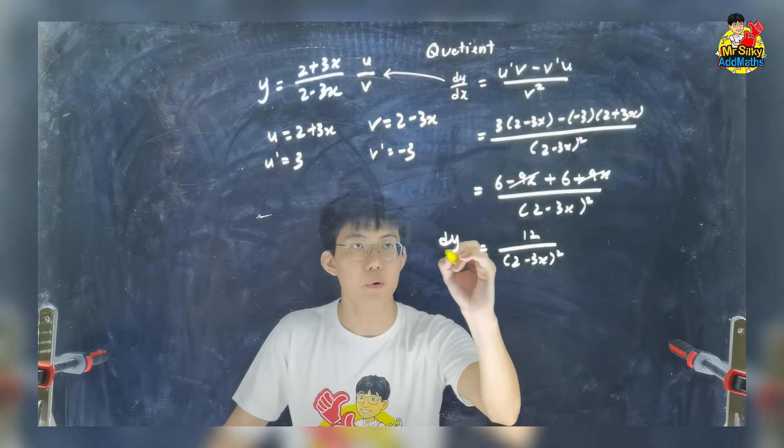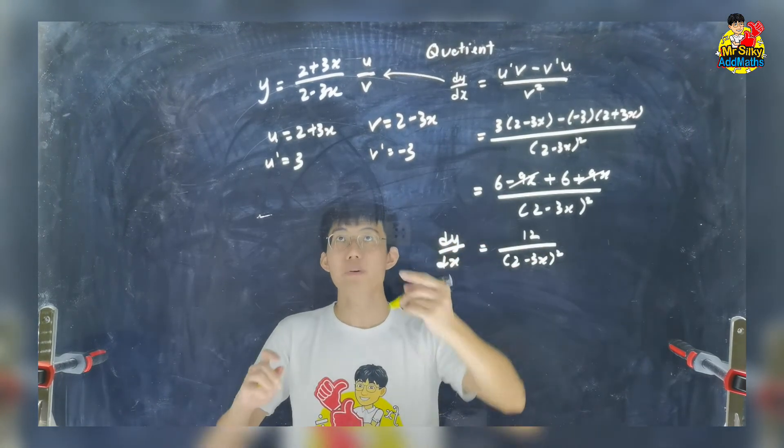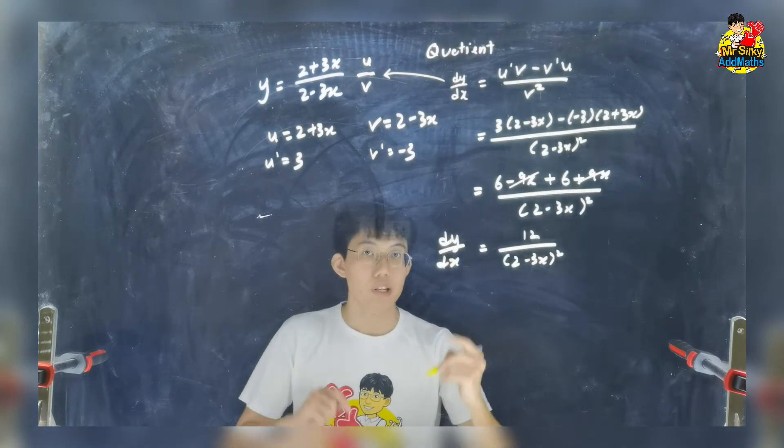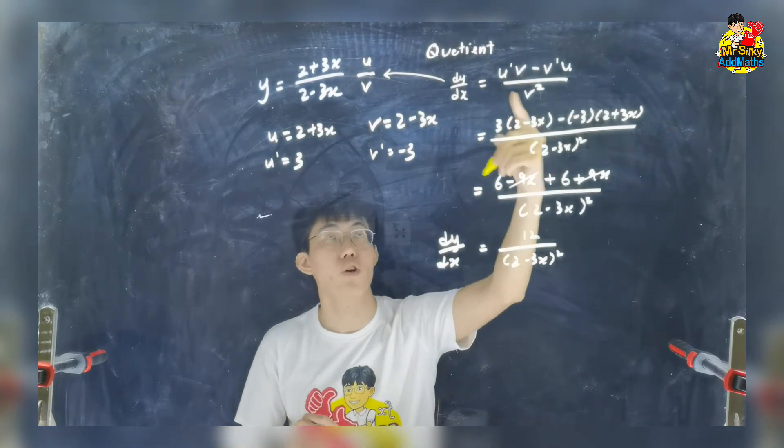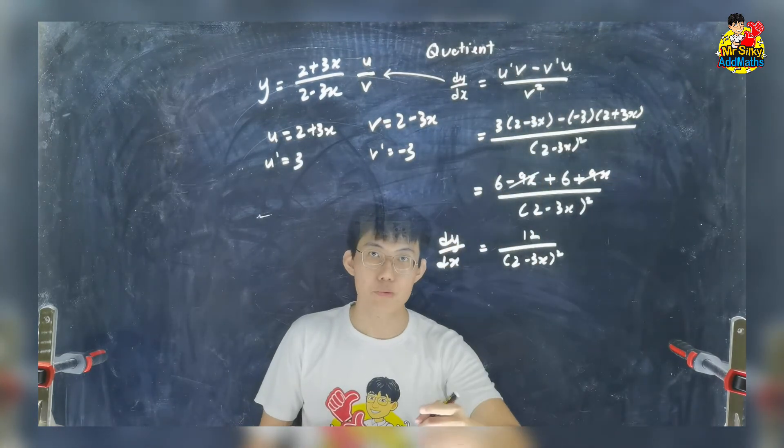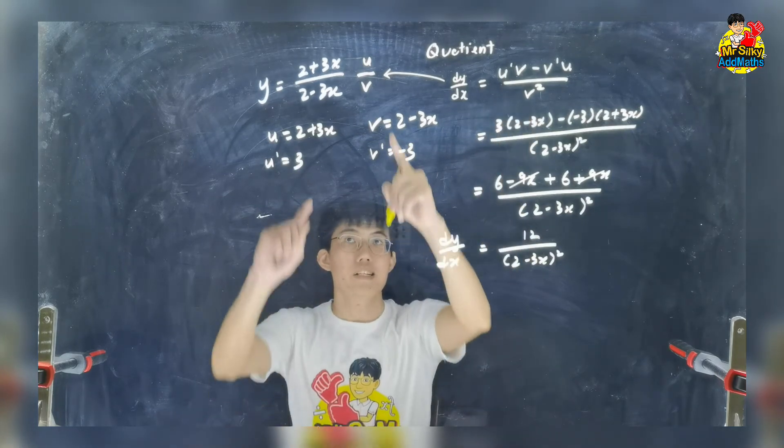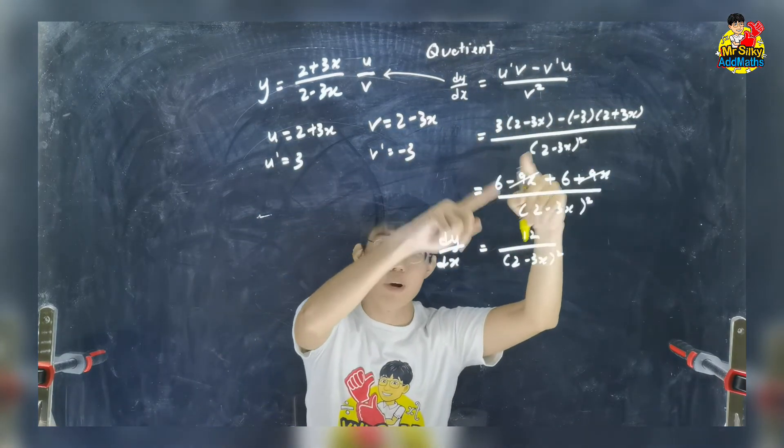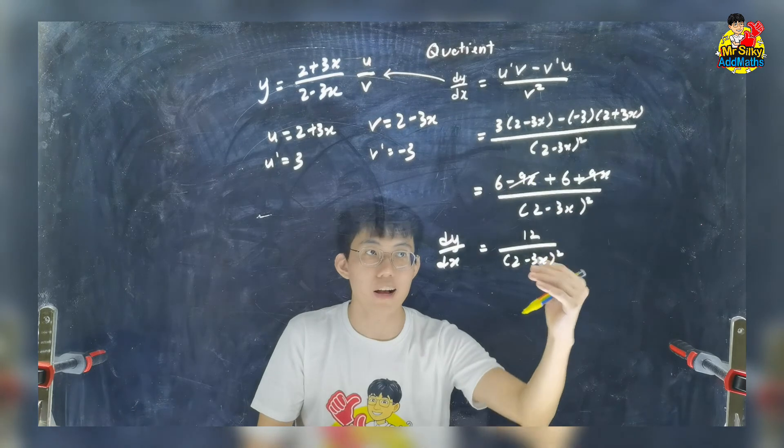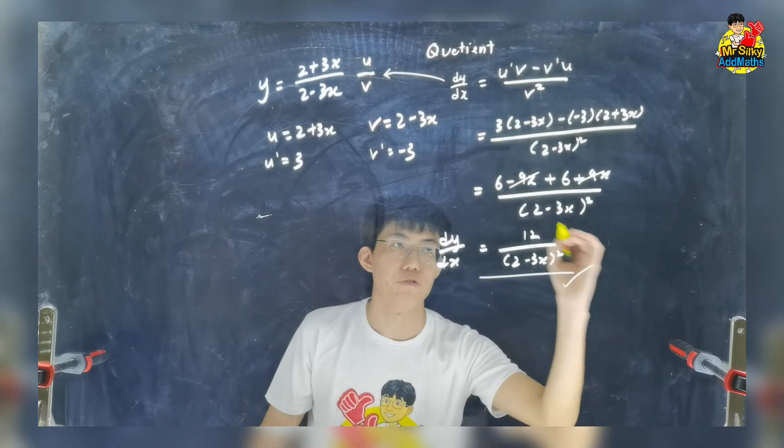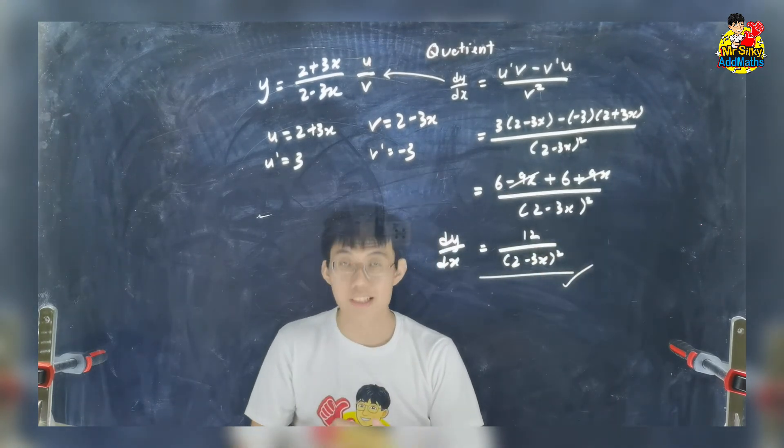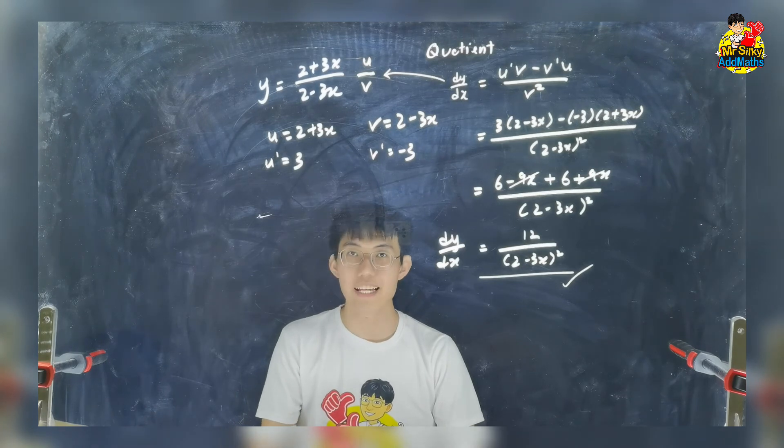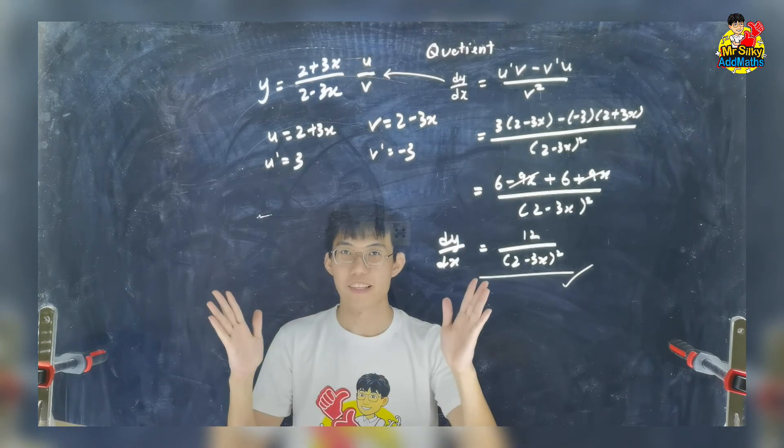So that's my dy/dx. So whenever you are trying to do quotient rule, just apply the formula according to this u prime v minus v prime u over v square. Separate it into 2, substitute whatever you can, simplify and get your final answer. So this is quotient rule and that's all for today. See you in the next video, thank you so much.